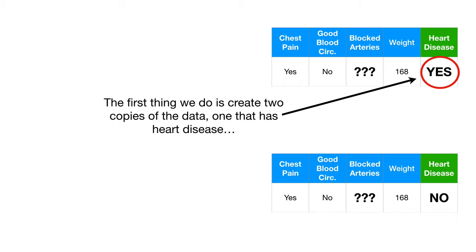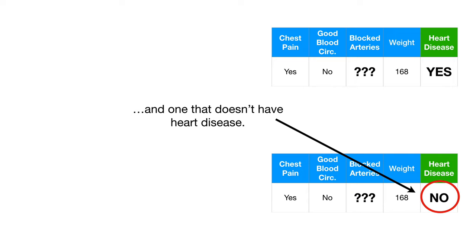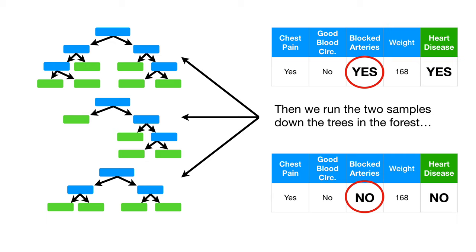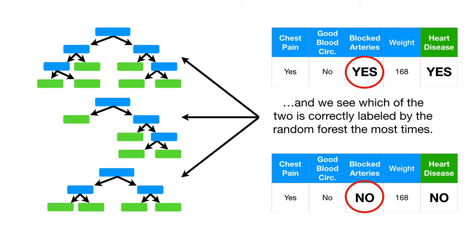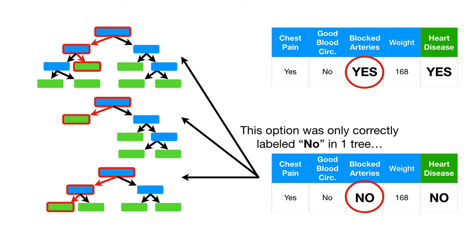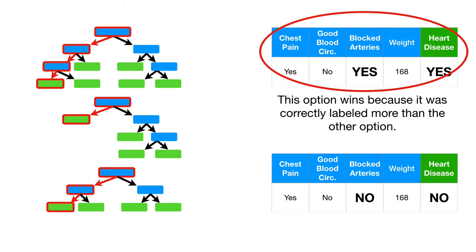The first thing we do is create two copies of the data. One that has heart disease and one that doesn't have heart disease. Then we use the iterative method we just talked about to make a good guess about the missing values. These are the guesses that we came up with. Then we run the two samples down the trees in the forest. And we see which of the two is correctly labeled by the random forest the most times. This option was correctly labeled yes in all three trees. This option was only correctly labeled no in one tree. This option wins because it was correctly labeled more than the other option.